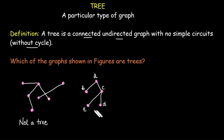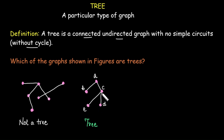The second graph: is it connected? Yes. Is it undirected? Yes. Does it contain any simple circuit or cycle? No. Therefore this graph is a tree. Remember, a graph is said to be connected if there exists a path between every pair of vertices. From vertex B we can reach vertex D by the path B to A, A to C, C to D. You need to check whether there exists a path between every pair of vertices for a graph to be called connected.